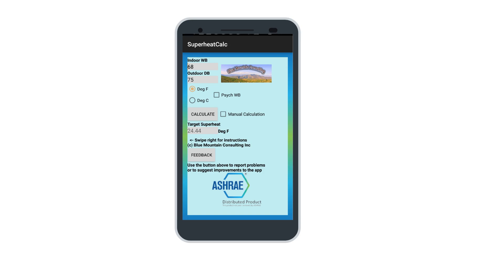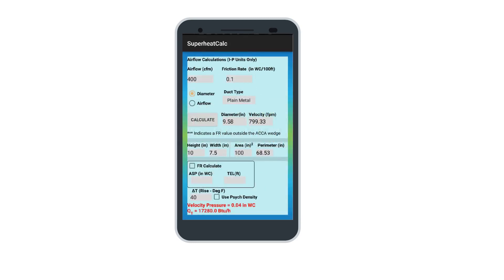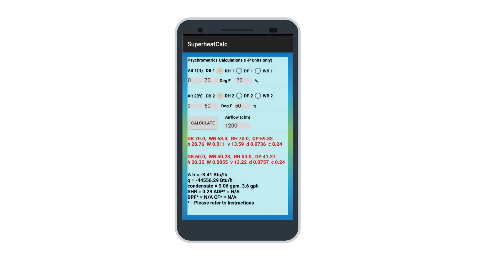The first page is used for calculating target superheat for systems with fixed orifice expansion devices. The second page is used for calculating superheat and subcooling for many refrigerants. The third page allows airflow calculations to be performed. And the fourth page is for psychrometric calculations.